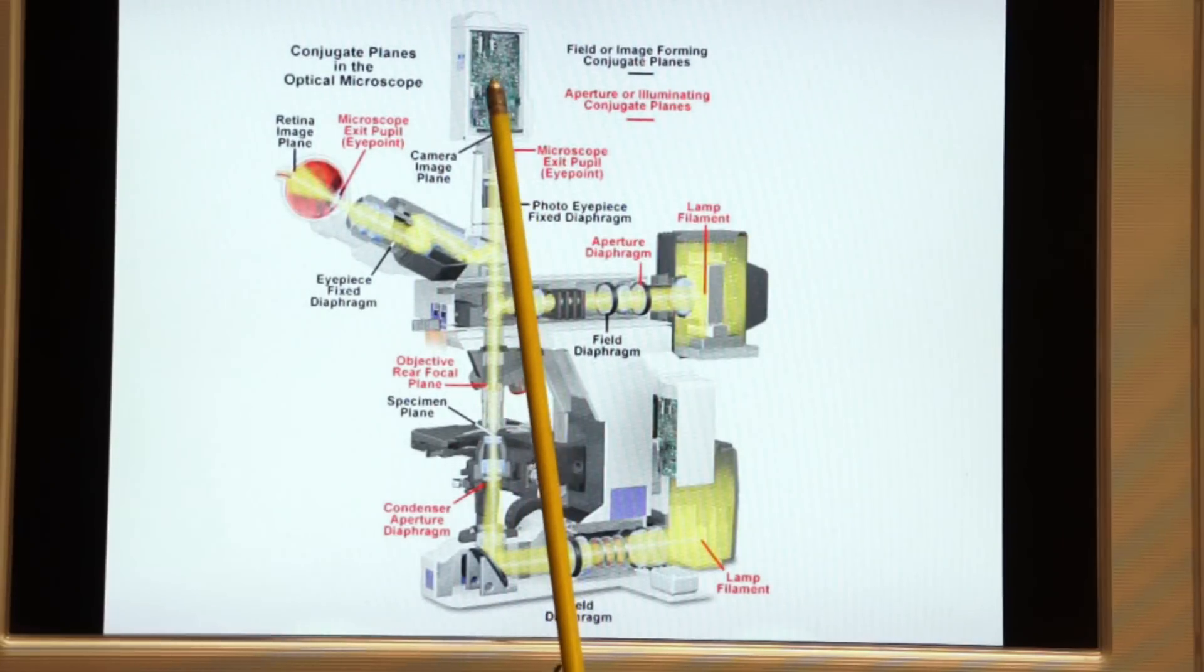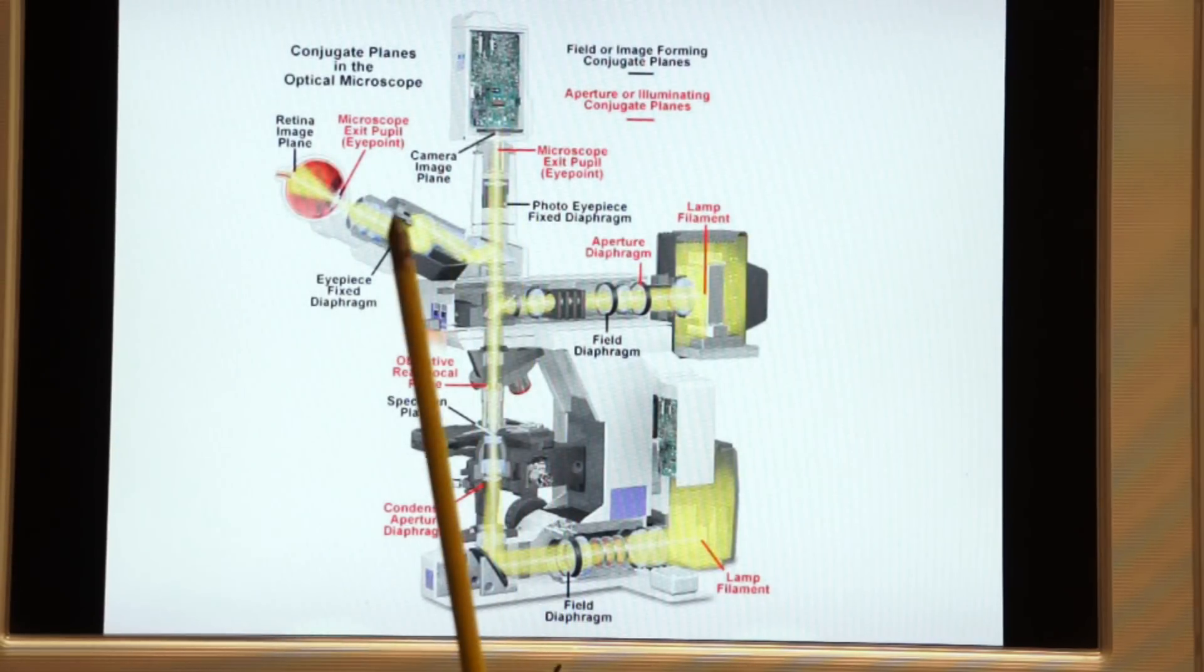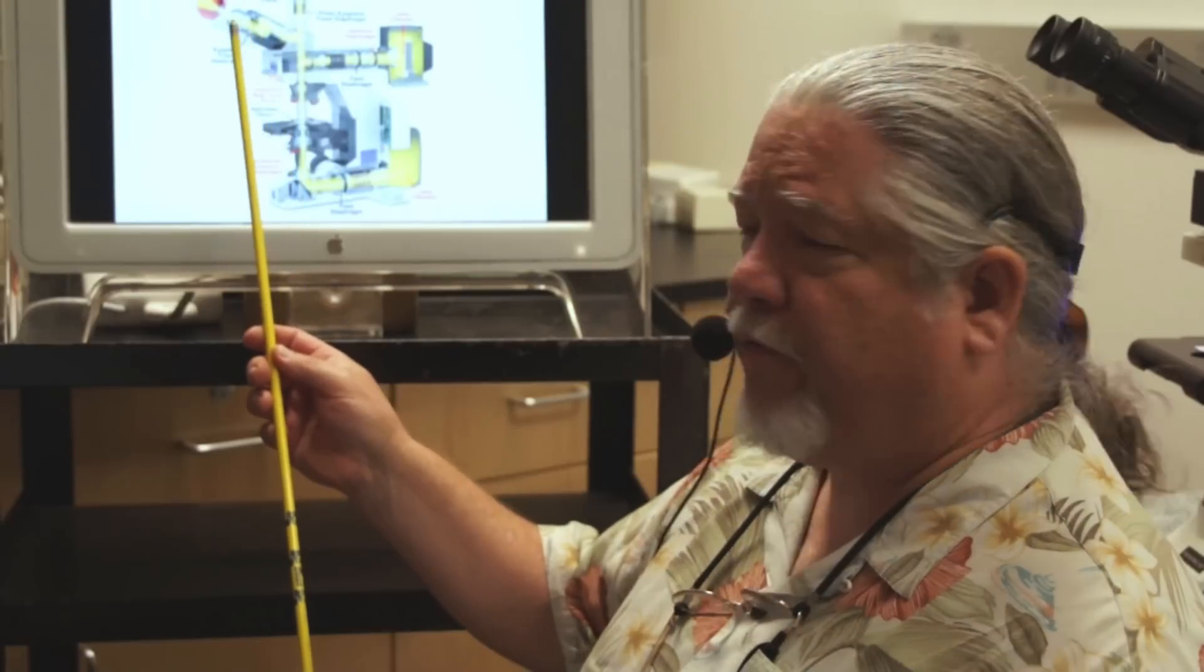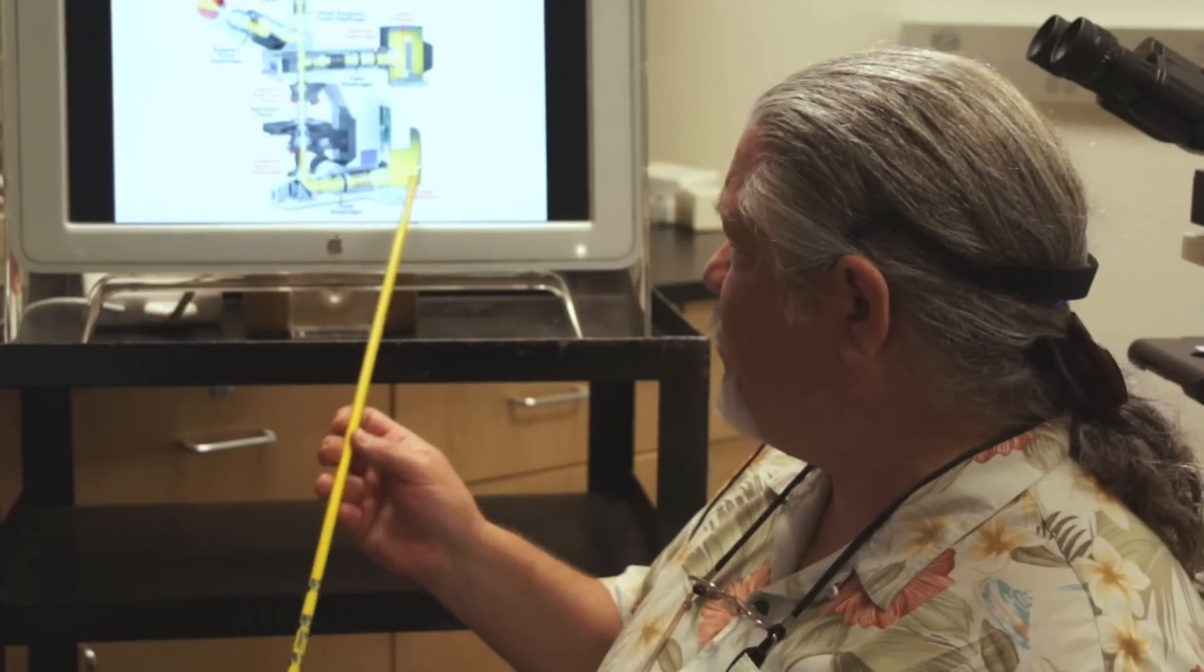Those images are then projected through the nose piece and through this vertical illuminator which we'll talk about in a second and into the binocular or trinocular tube for the observer to see. So that's transmitted light.